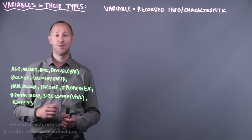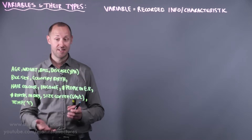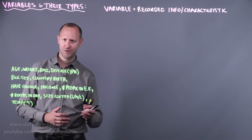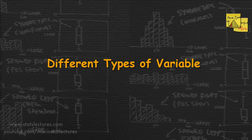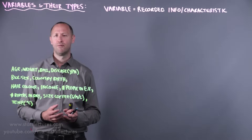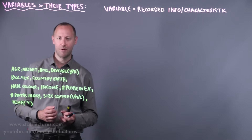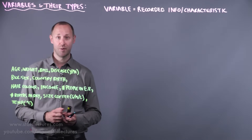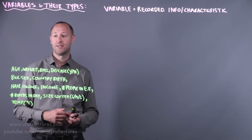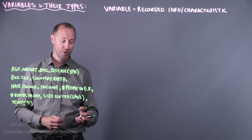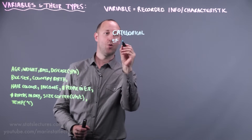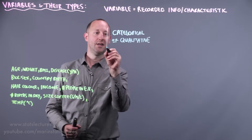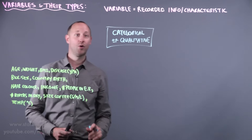For our discussion, we might record variables like age, weight, BMI, whether someone has a disease (yes or no), biological sex, country of birth, and so on. The way we summarize and analyze data depends largely on the type of variables we have. Variables fall into one of two broad categories. The first type we can call categorical — also sometimes called qualitative — which places people into categories or records qualities about them.